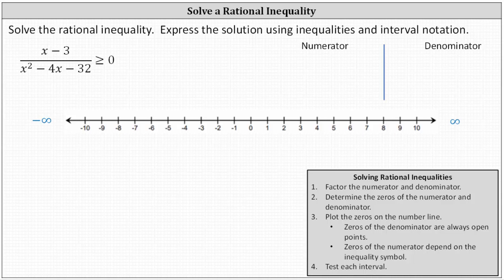We're asked to solve the rational inequality and express the solution using inequalities as well as interval notation. To solve a rational inequality, the first step is to factor the numerator and denominator, which in our case means we must factor the denominator. Notice the numerator is already factored.